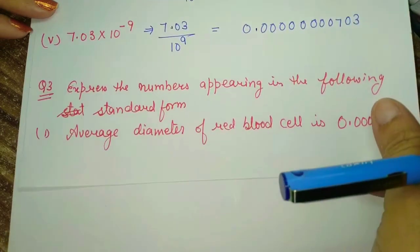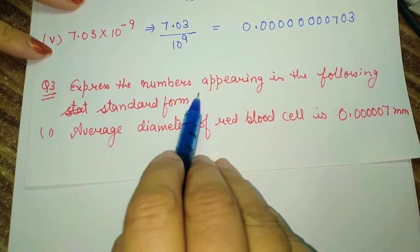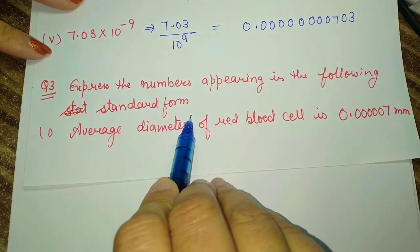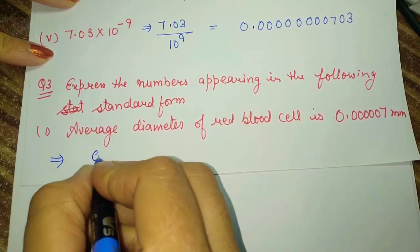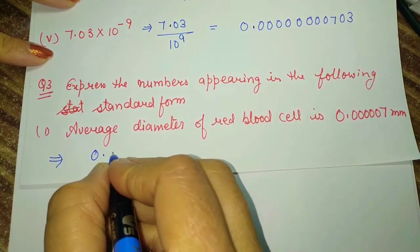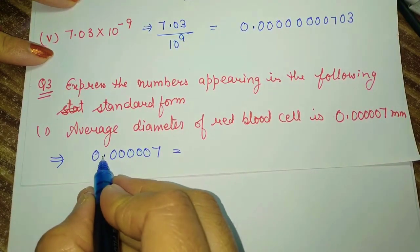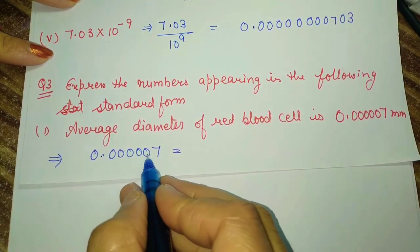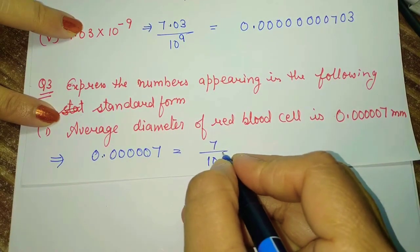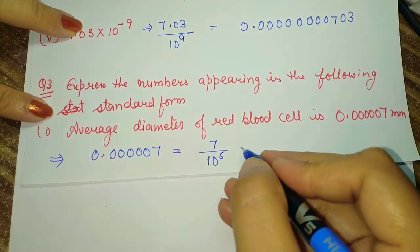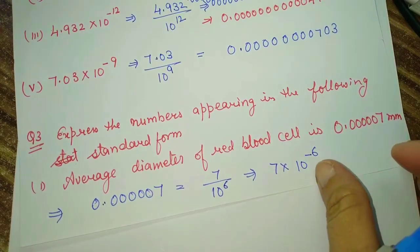Now we are going to solve question number 3: express the numbers appearing in the following statements in standard form. They have given the number 0.0000007. After the decimal, how many digits? 1, 2, 3, 4, 5, 6. So we can write 10 to the power 6. Converting: 7 × 10 raised to the power minus 6.